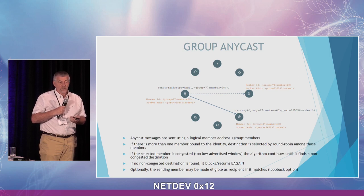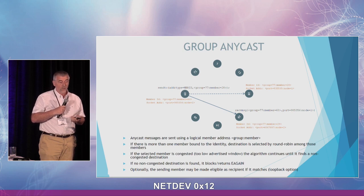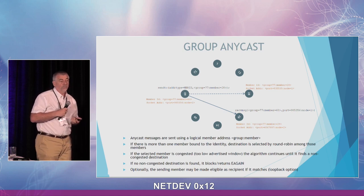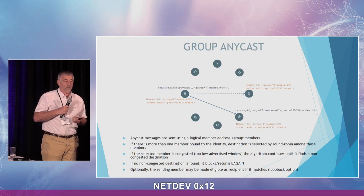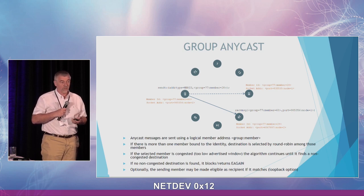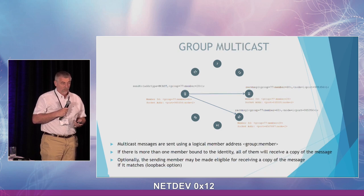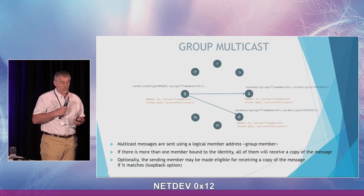Another feature is that any sender socket can make itself eligible to receive its own messages — a loopback option. For example, if the sending member has the same member ID as other members in the group and has set this option, it would receive its own share of anycast messages. The same applies to multicast and broadcast: a sender can make itself eligible for loopback reception.